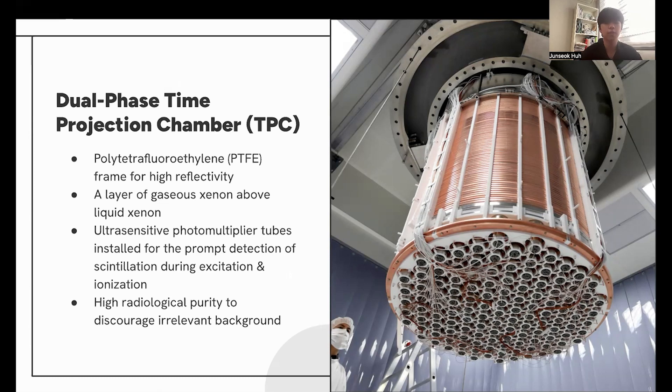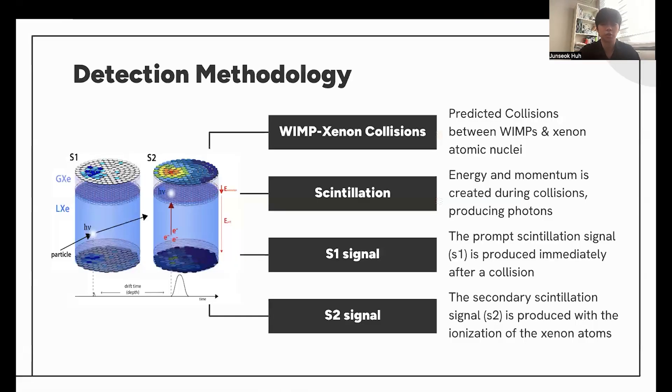In addition, it has ultra-sensitive photomultiplier tubes installed for the prompt detection of scintillation signals, and it also maintains a high radiological purity to discourage any irrelevant background noise that may cause from either radioactive decay or pure radiation produced from these materials. This TPC helps better identify and categorize situations if WIMPs do actually collide with Xenon atomic nuclei.